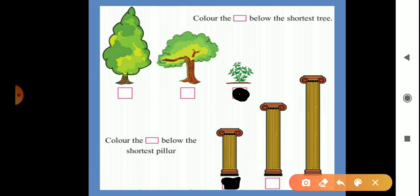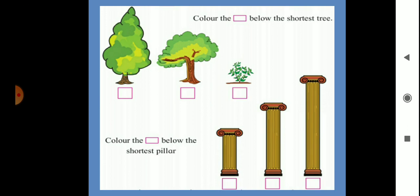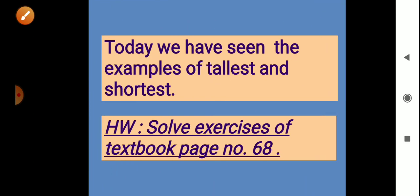I hope you understood this lesson on tallest and shortest. We say tallest or shortest when there are three or more things. Today we have seen examples of tallest and shortest. Your homework is to solve the exercises on textbook page number 68, and also draw two or three other examples in your notebook.